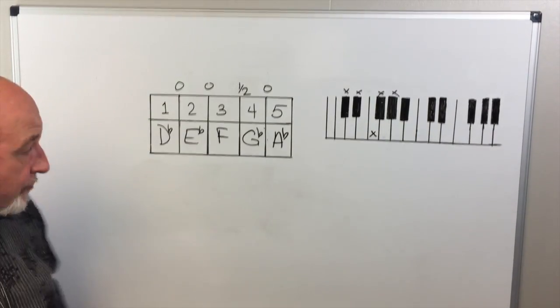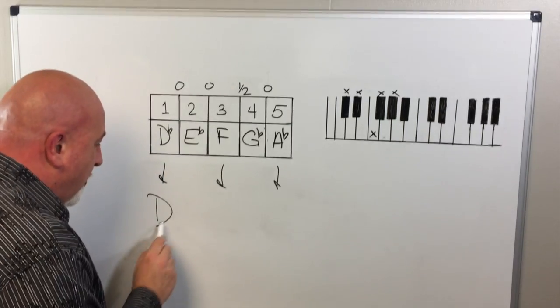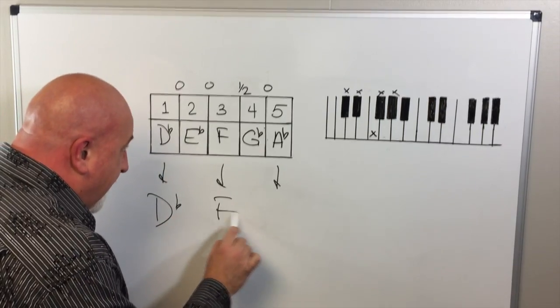So, in order to make our tonic triad, we want to drop the first, the third, and the fifth position down, which gives us D-flat, F, and A-flat.